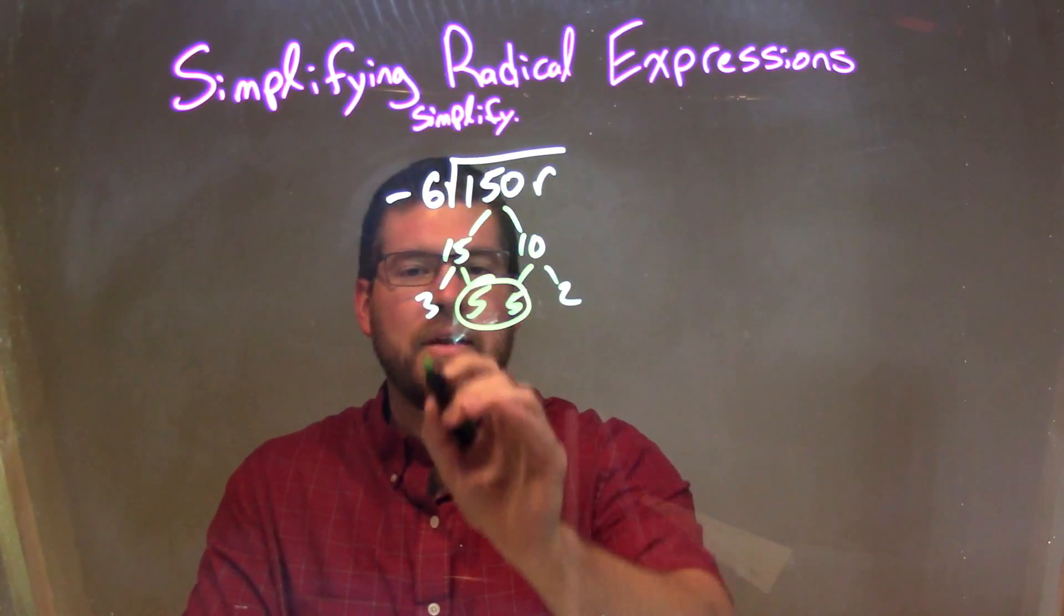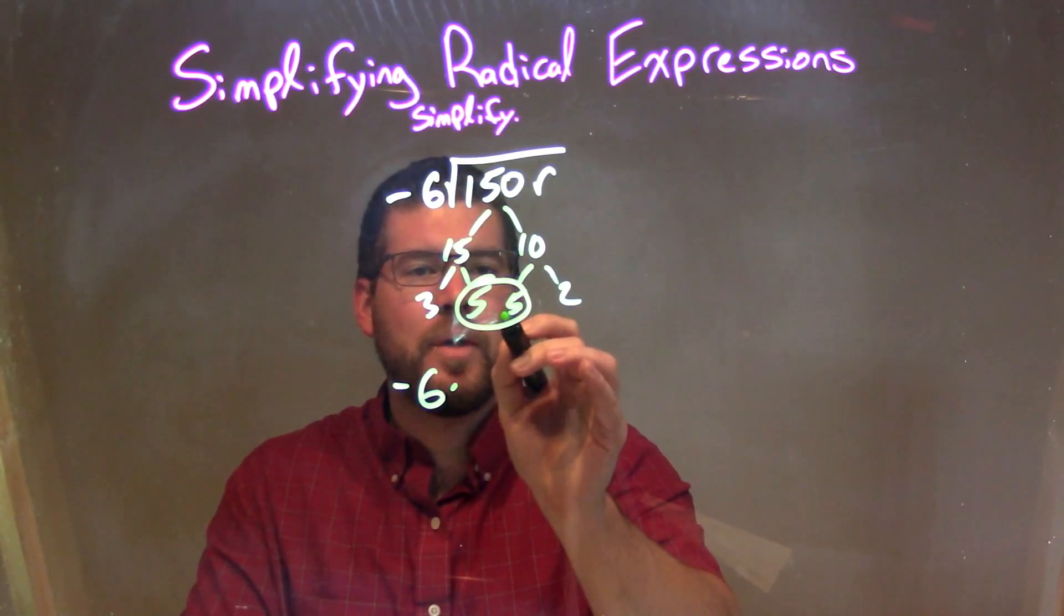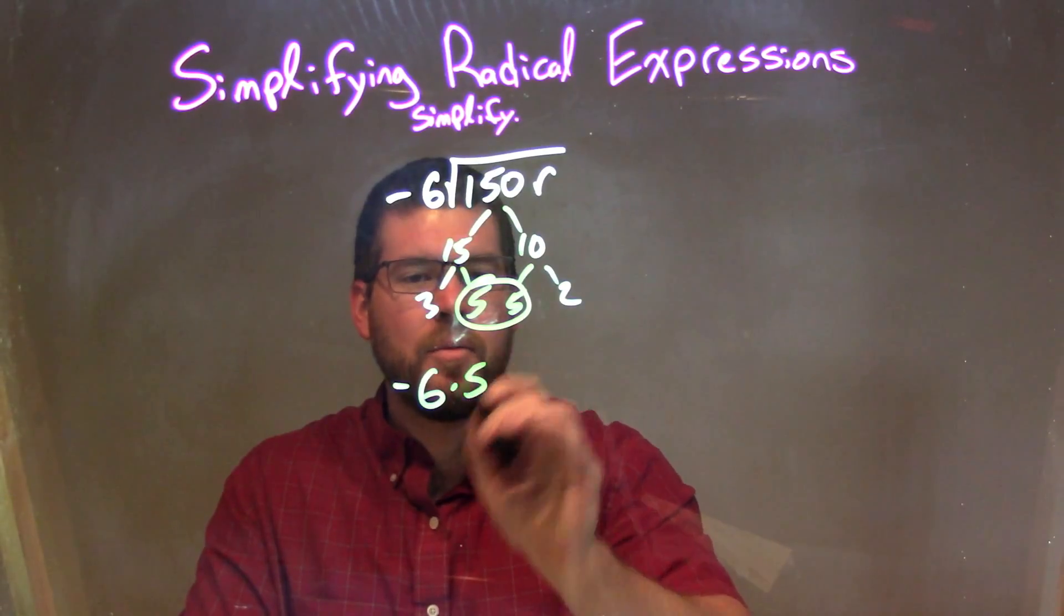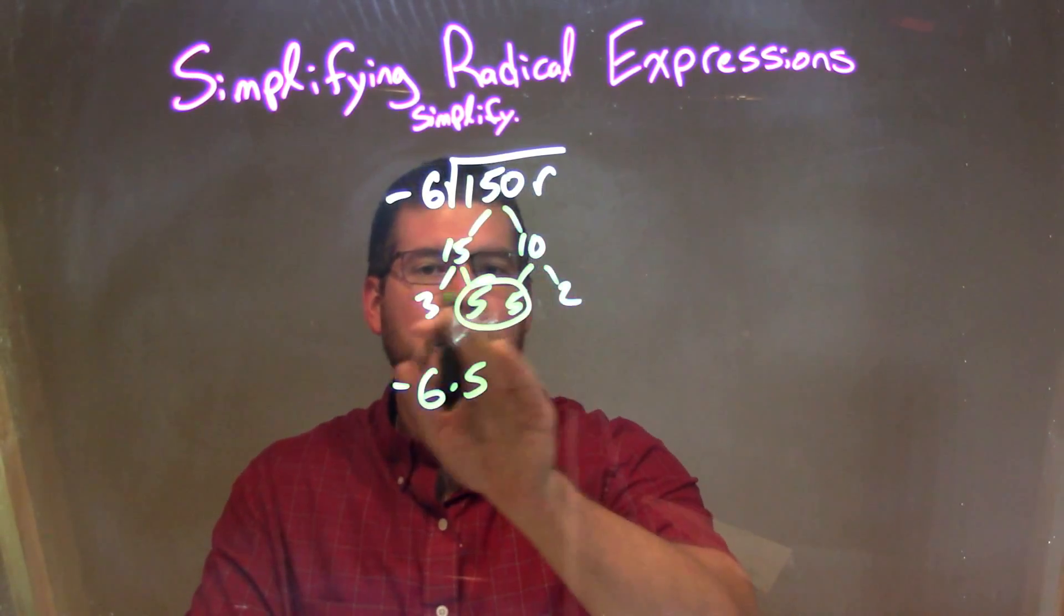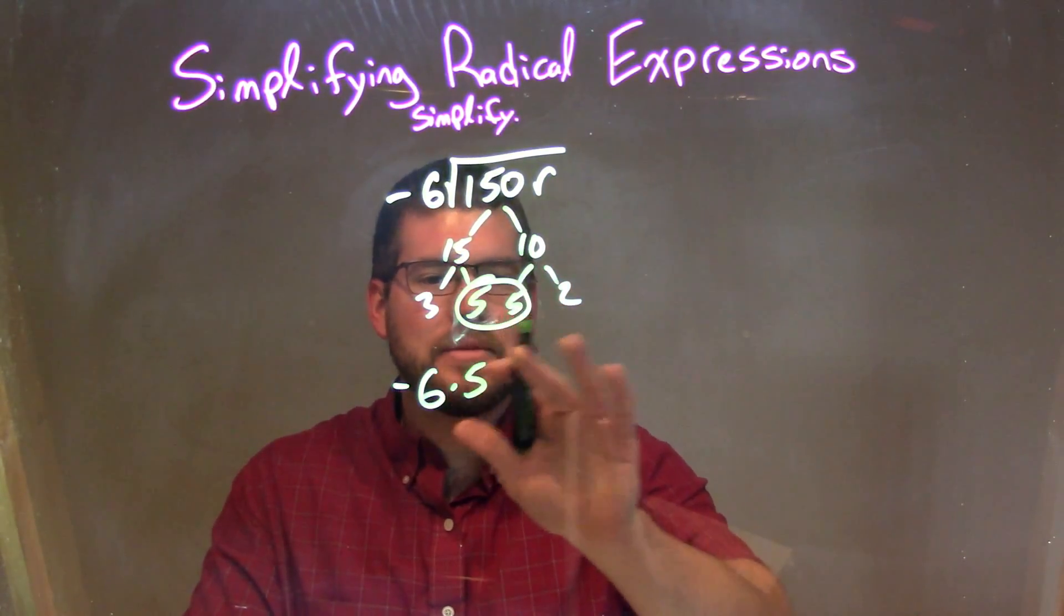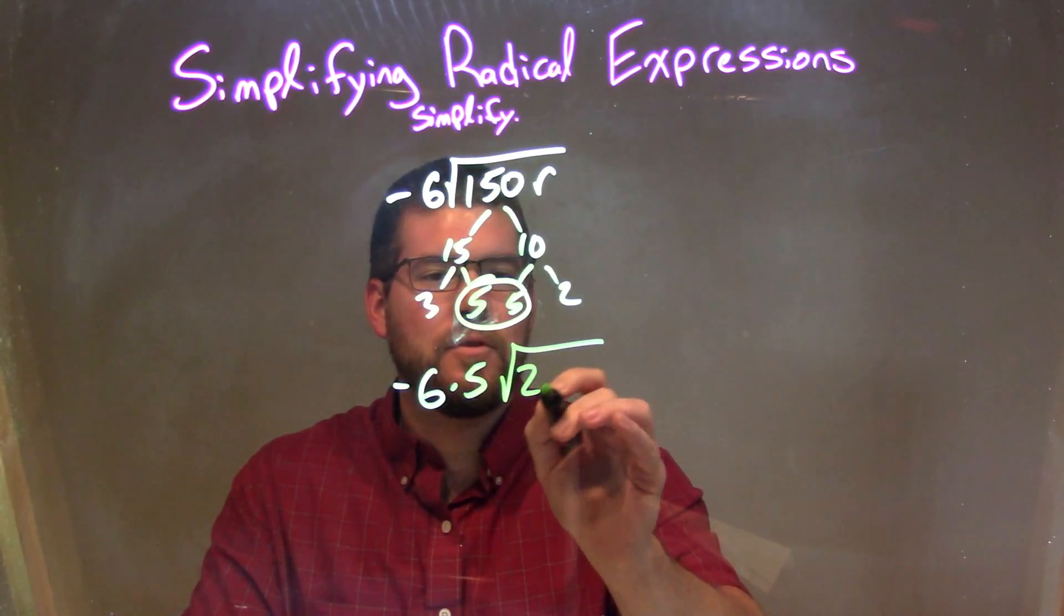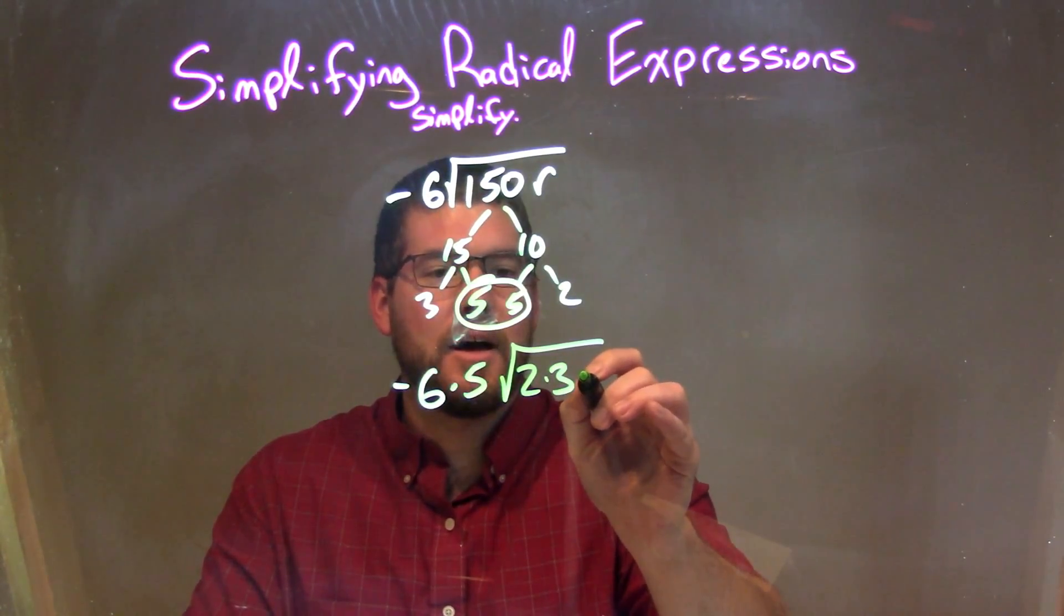So when we simplify this out, the negative 6 stays on the outside. We're going to multiply that by one of our pairs, which is a 5. Everything else, every other single element, stays inside the square root. So we have 2 times 3 times R.